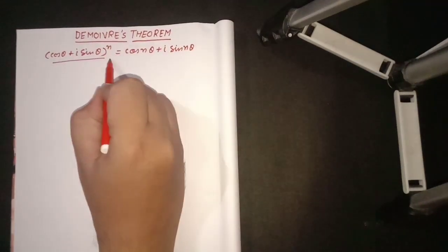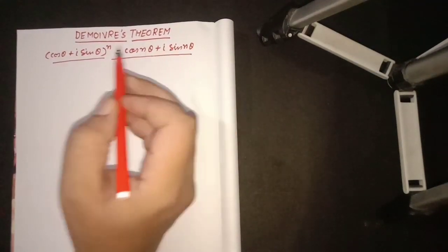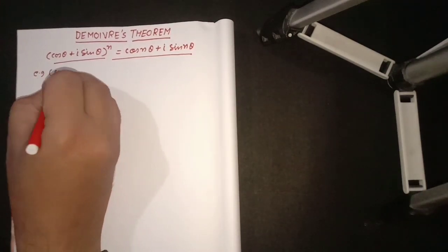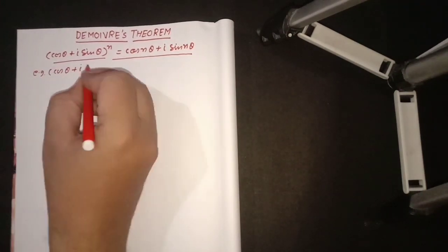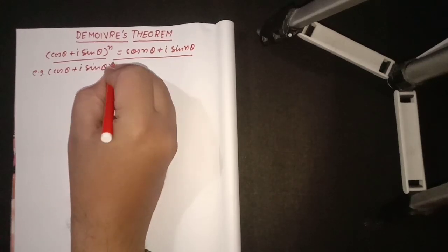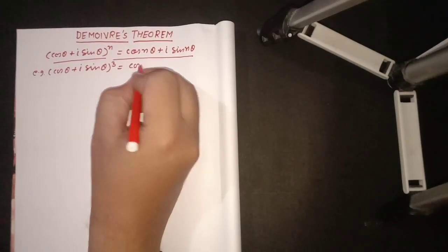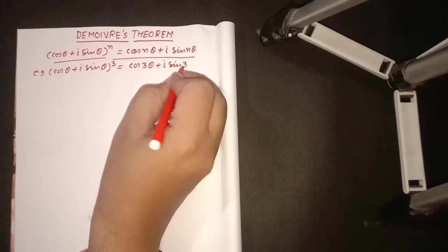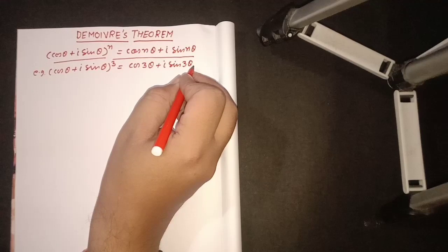This theorem is known as DeMoivre's theorem. For example, we can write (cos θ + i sin θ) whole cube. So that will come out cos 3θ + i sin 3θ. This theorem is known as DeMoivre's theorem.